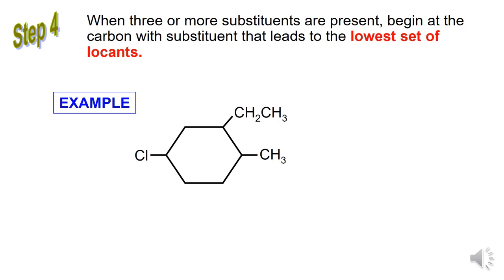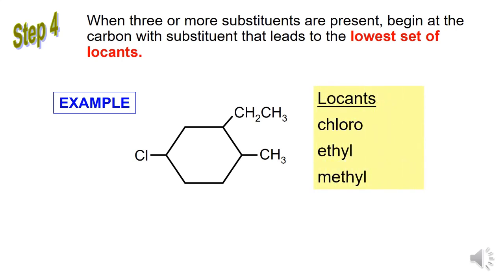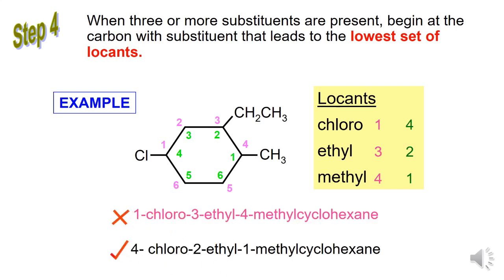Step 4: When 3 or more substituents are present, begin at the carbon with the substituent that leads to the lower set of locants. Example: this structure has 3 substituent groups — Cl, CH2CH3, and CH3, which are chloro, ethyl, and methyl. Start numbering from Cl: chloro is 1, ethyl is 3, methyl is 4. The next option, if starting from CH3: methyl is 1, ethyl is 2, chloro is 4. Based on Step 4, the correct IUPAC name is 4-chloro-2-ethyl-1-methylcyclohexane.